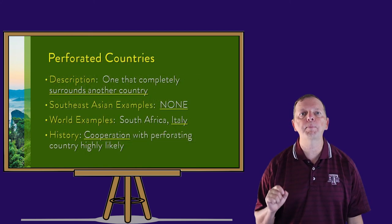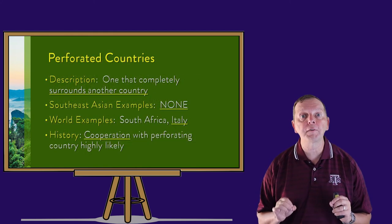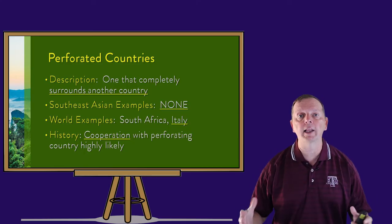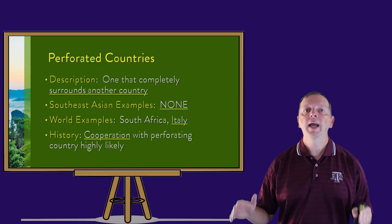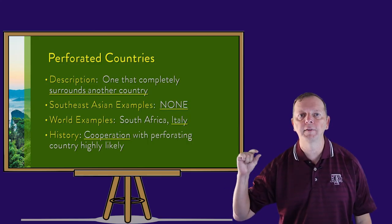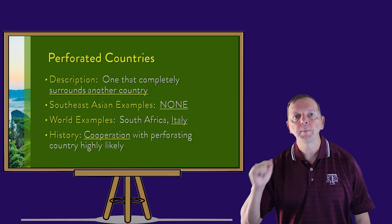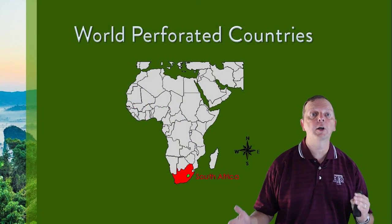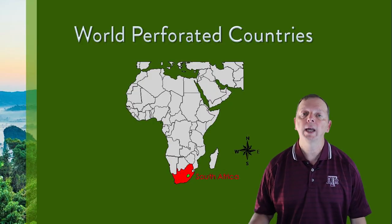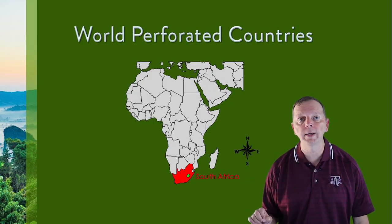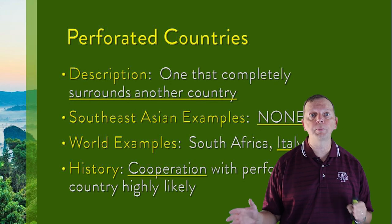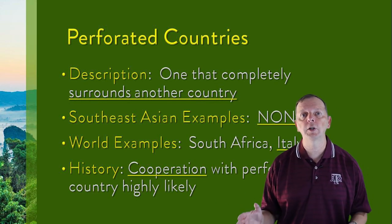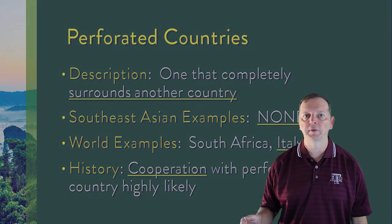The last type of country is a perforated country. The word perforated literally means having a hole in it — a perforated country is one that completely surrounds another country. This is the only type of shape we do not find in Southeast Asia. But Africa has one: South Africa completely surrounds the tiny nation of Lesotho. And Europe also has a perforated country — Italy completely surrounds the smallest country in the world, Vatican City. There is usually a high level of cooperation between both these countries, because the country inside would not be able to survive otherwise.